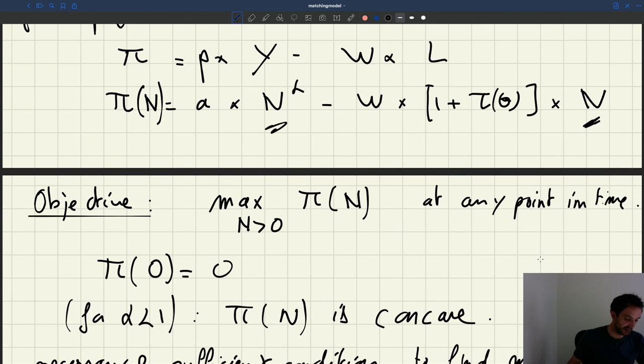This I just take the derivative of the function type here. I have a linear component and a concave component, so this is very easy to take the derivative. So I need to have this equal to zero.